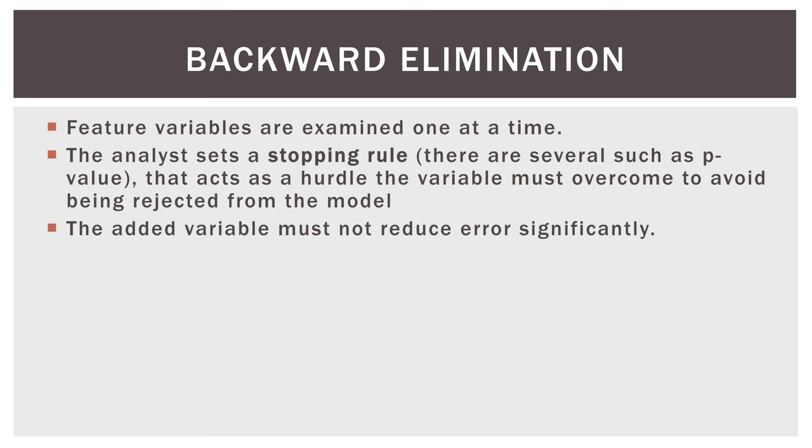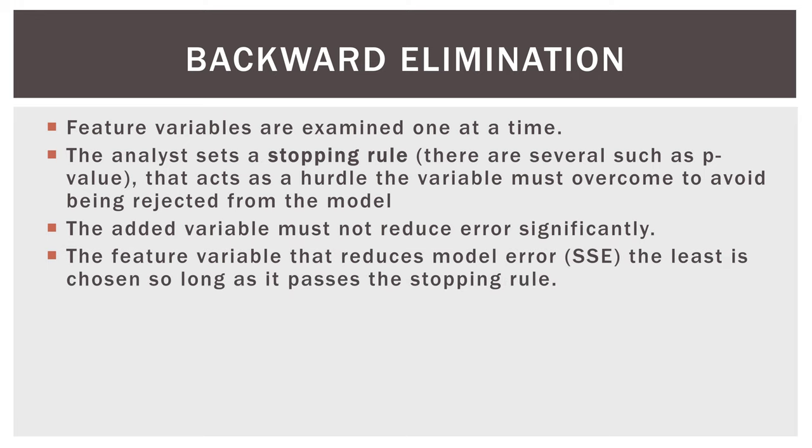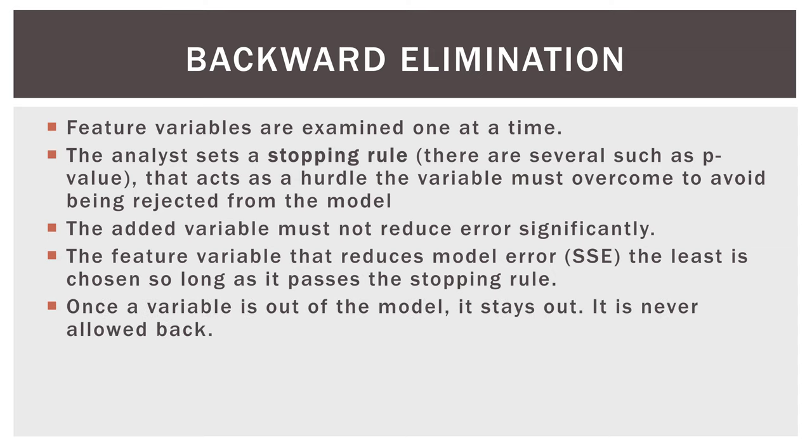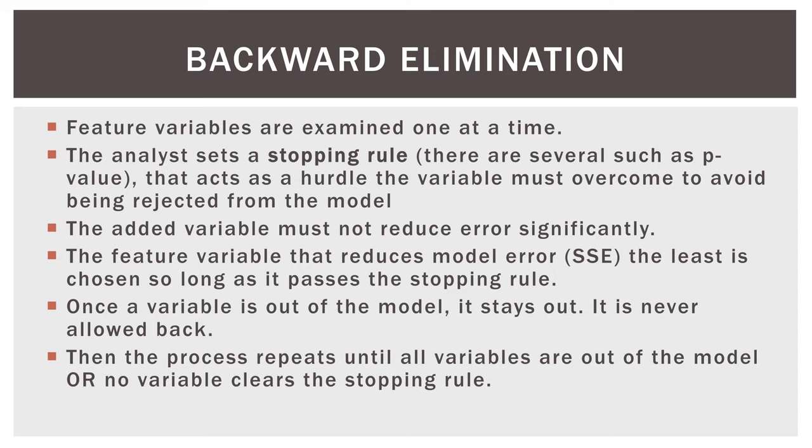Now the variable we are examining must not reduce error significantly. That's a weird way of thinking about it because we're used to thinking about it the other way, which is forward selection. The variable we're looking at must not reduce error significantly. That's another way of saying that whether the variable is in the model or not has very little effect on the model's sum of squares due to error. The feature variable that reduces model error or SSE the least is chosen so long as it passes the stopping rule. Once a variable is out of the model, it stays out. It is never allowed back in. Then the process repeats until all variables are out of the model or no variable clears the stopping rule.